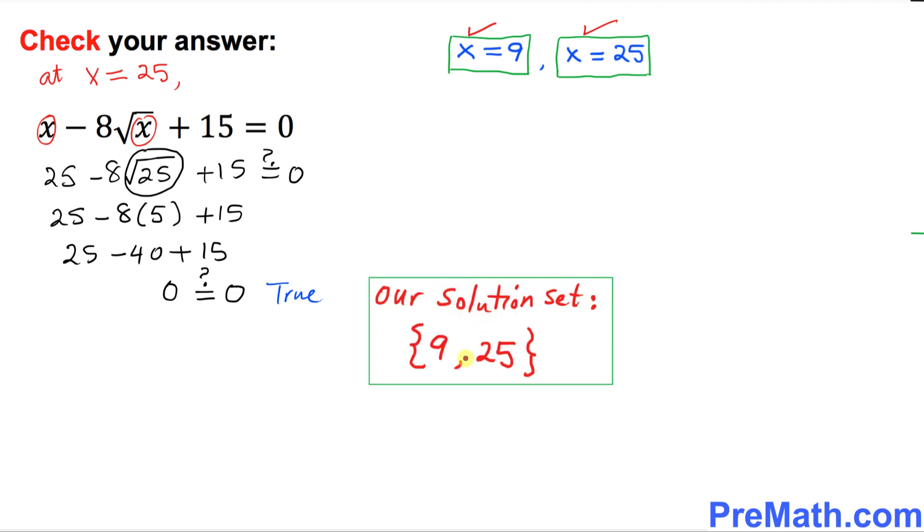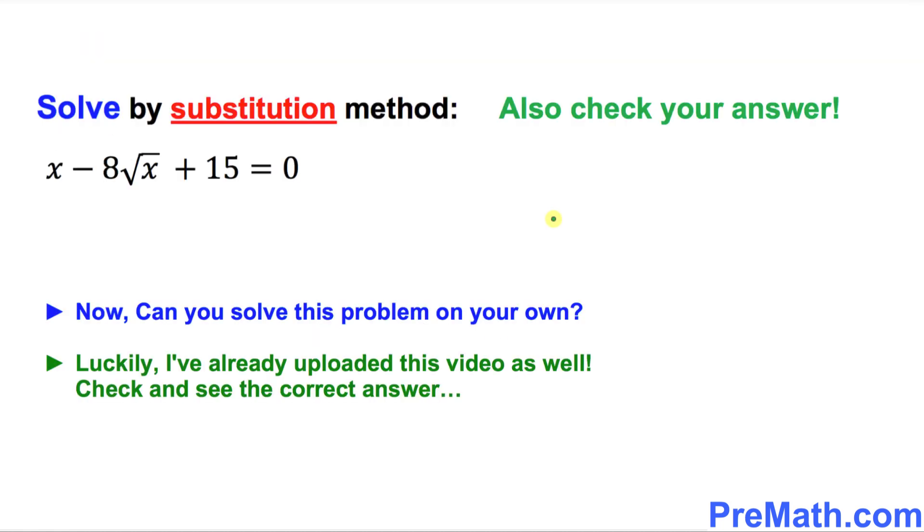Thus, our solution set turns out to be 9 and 25. And here is your assignment. Can you do the very same radical equation by using a substitution method? That's it.